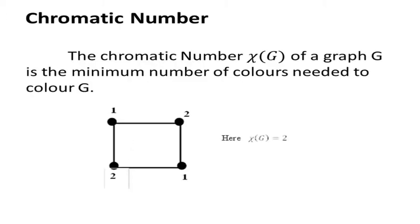Next we get into the definition of chromatic number. The chromatic number chi(G) of a graph G is the minimum number of colors needed to color the graph, so that no two adjacent vertices get the same color. For the cycle C4, we need two colors to color the graph. So chi(G) for this graph is 2.